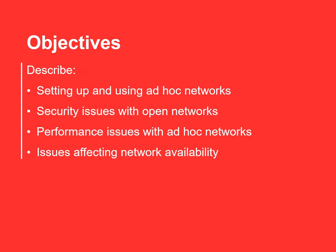Today's lesson objectives: we aim to look at and describe what setting up and using ad hoc networks means, including the definition of what an ad hoc network is. We're looking at security issues with open networks, such as when you go to McDonald's or connect to a network on a train. We'll also look at performance issues with an ad hoc network and finally at issues that affect network availability — from low signal all the way to having no signal.